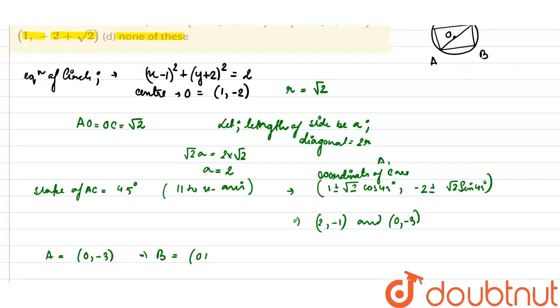Therefore, the coordinate of B will be 0 + 2, -3, which equals (2, -3).